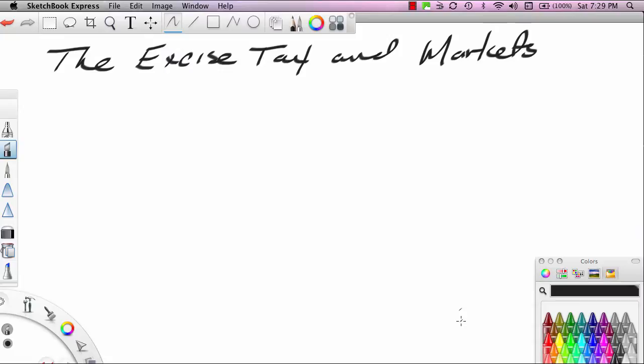The excise tax is a tax levied by government on a specific product. For instance, in the United States we see excise taxes on petroleum products like gasoline, on tobacco products like cigarettes, and on products like alcohol because these products tend to have low elasticity coefficients. In other words, the buyers of these products tend to be relatively price insensitive.